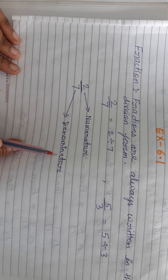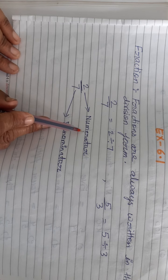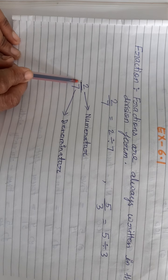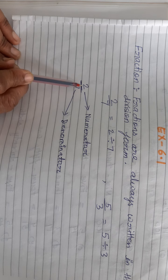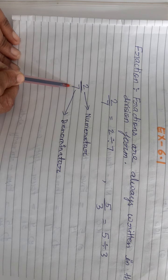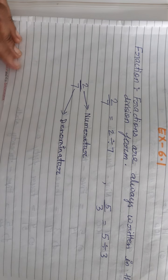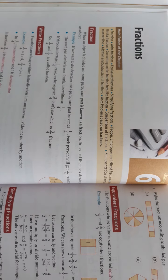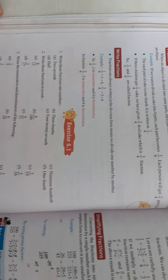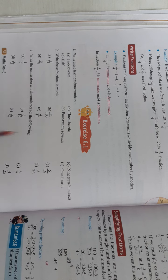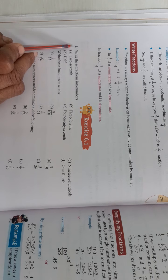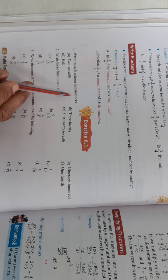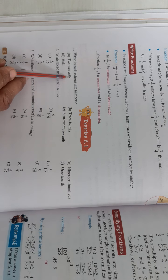If you want to remember the numerator and denominator — the top number is the numerator and the bottom is the denominator. 2 upon 7 — yeh hamara fraction. Now we start exercise 6.1. Yeh hamari exercise 6.1. Question number 1: write these fractions into numbers — yeh words mein likha hua hai.